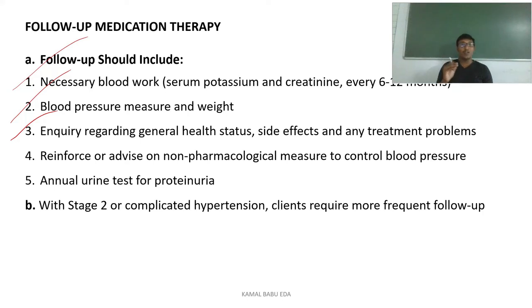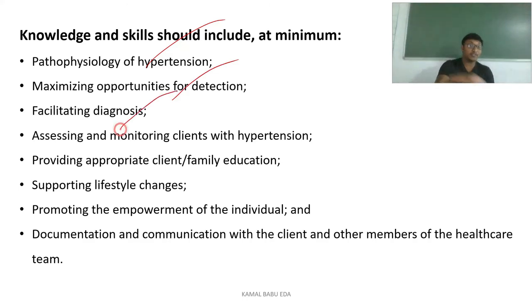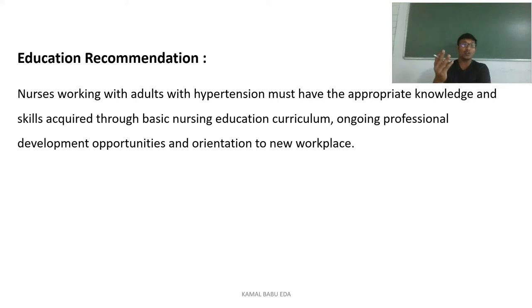Annual urine tests for proteinuria should be done. Patients with stage 2 or complicated hypertension require more frequent follow-up than stage 1. Nurses working with adults with hypertension must have appropriate knowledge and skills. At minimum, nurses should know the pathophysiology of hypertension, maximize opportunities for detection, facilitate diagnosis, assess and monitor clients, and provide appropriate client and family education. Ongoing professional development and orientation to new workplaces must be provided.